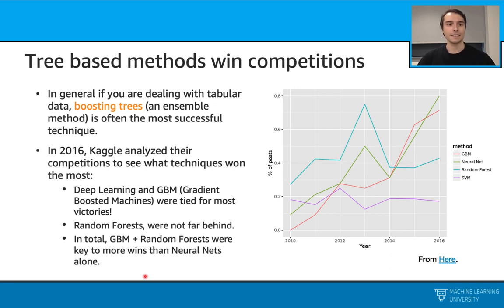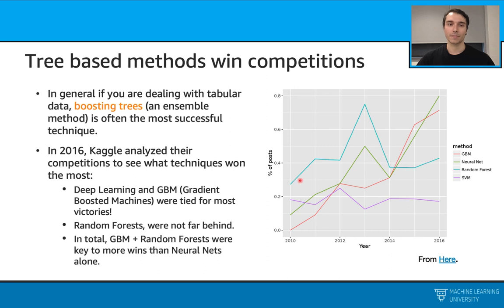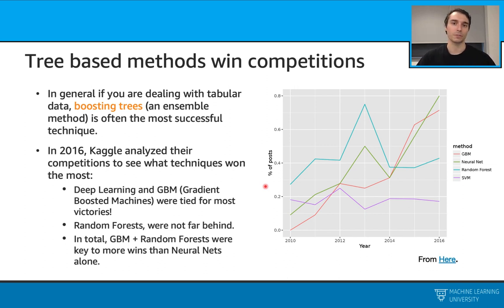In 2016, Kaggle analyzed their competitions to see what techniques were used for the winners. And here's this plot. In this plot, we see the years, and we see these methods that the winners use, and we see these percentages here. When we look at this closely, we realize that deep learning and gradient-boosted machines are tied for the most winners, and random forests are close to those. If you combine gradient-boosted machines and random forest, we see that they actually win more competitions than neural networks. So this shows the power of tree-based methods.